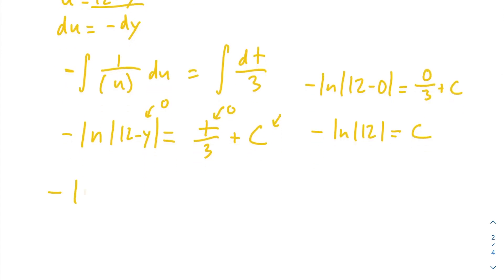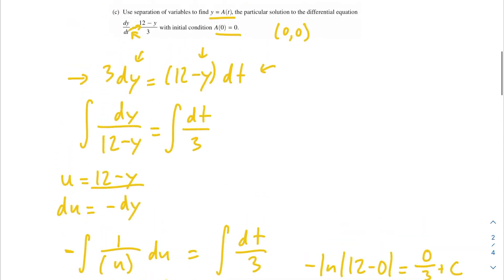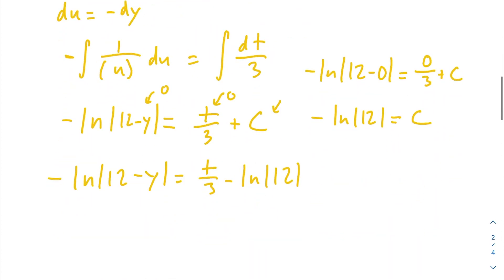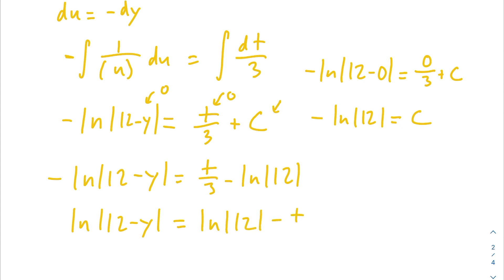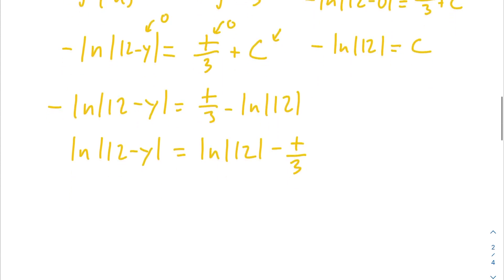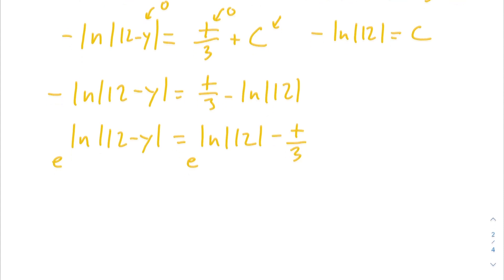Plugging c back in: -ln|12 - y| = t/3 - ln 12. We've solved for the constant of integration, but we need to solve for y = a(t). Let's get rid of the negative by dividing both sides by -1, so ln|12 - y| = -t/3 + ln 12. Now we eliminate the ln by raising both sides as powers of e, so ln cancels and we have 12 - y = e^(ln 12 - t/3).